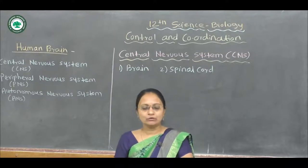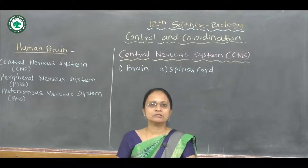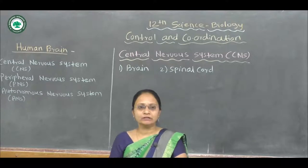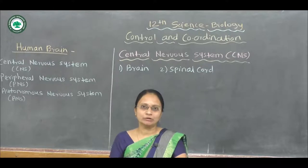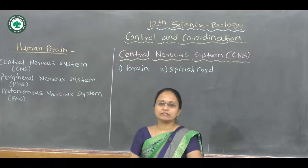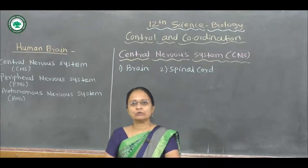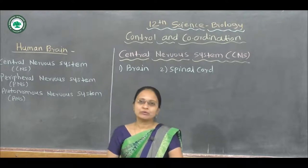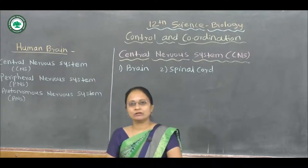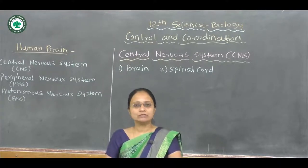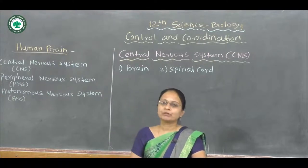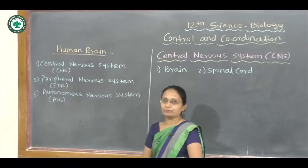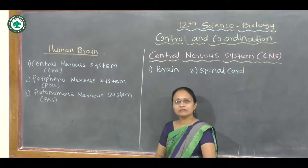In the last video, we have seen about the nervous system present in Hydra and the nervous system present in Planarians. In this video, we are going to show how the nervous system works in humans and which types of nervous systems are present in the human body. There are three different types: the first is the central nervous system, the second is the peripheral nervous system, and the third is the autonomic nervous system.